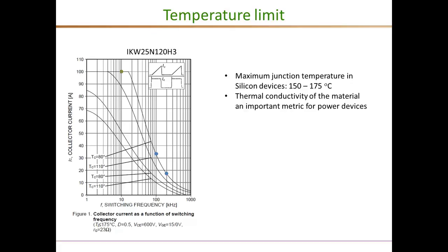This is one metric in which silicon carbide devices far exceed silicon devices. Because of the wide band gap, silicon carbide devices can operate at well above two to three times the maximum junction temperature of silicon devices. Together with much higher thermal conductivity, this makes silicon carbide an excellent device for high-temperature applications, as well as helping reduce the size and cost of thermal management systems.